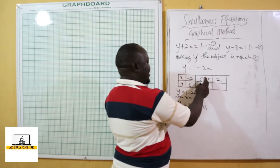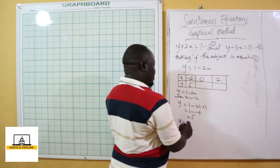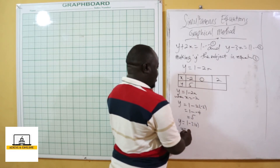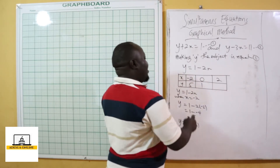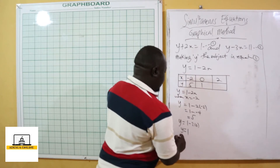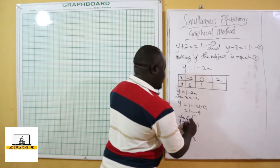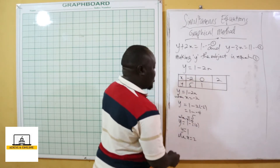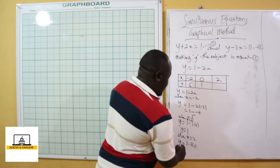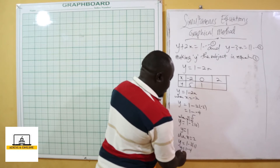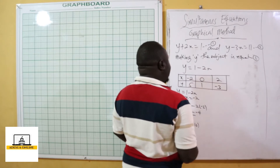When x is 0: y equals 1 minus 2 times 0, so y equals 1. When x is 2: y equals 1 minus 2 times 2, which is 1 minus 4, so y equals negative 3. So for equation 1: when x is negative 2 y is 5, when x is 0 y is 1, and when x is 2 y is negative 3.